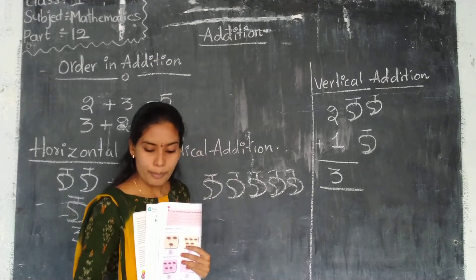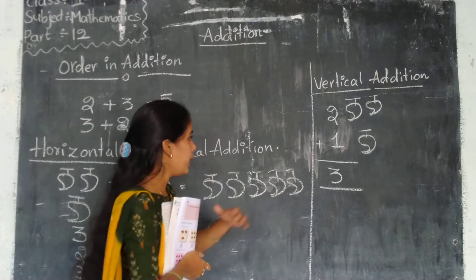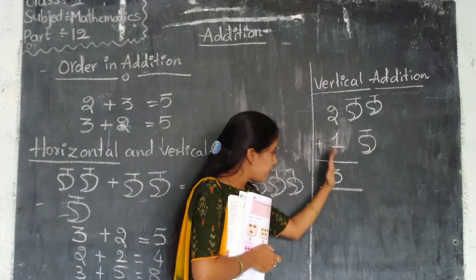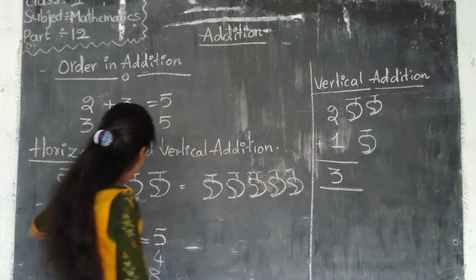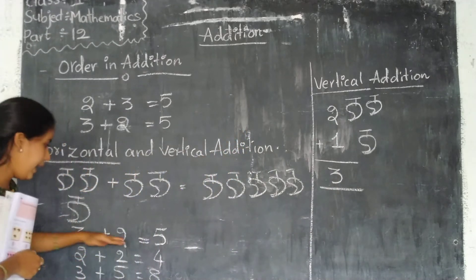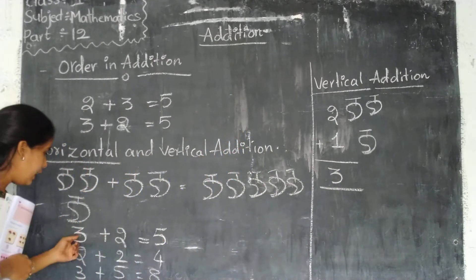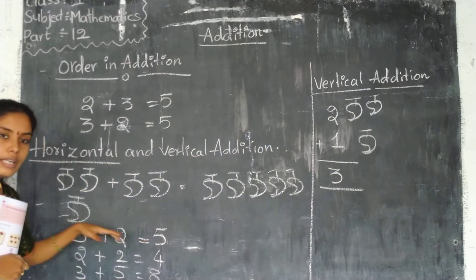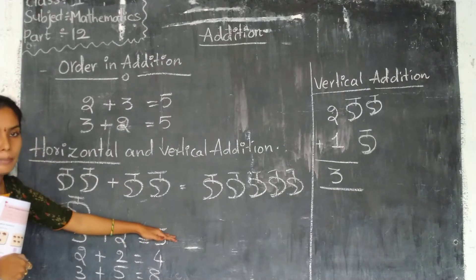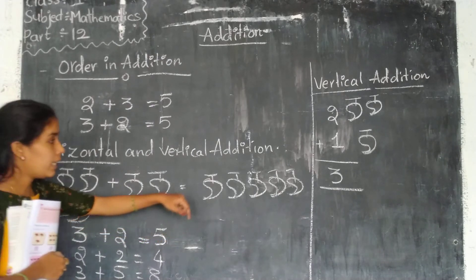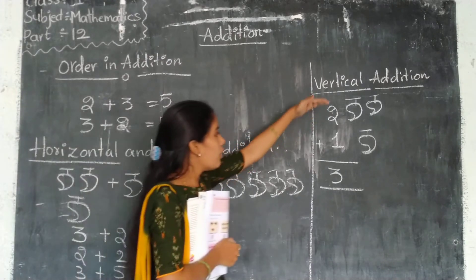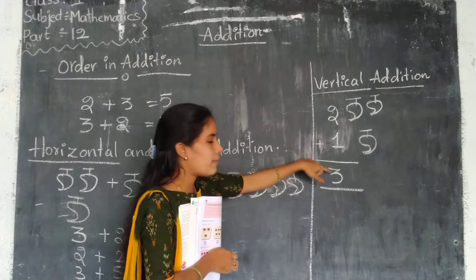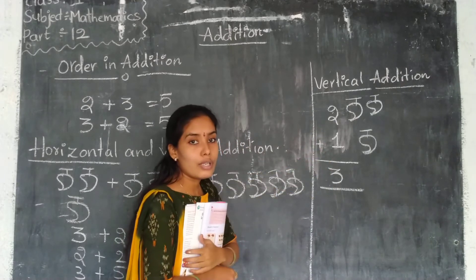Look and observe carefully. In horizontal addition we write numbers straight across in a line. But in vertical addition we write numbers one by one, stacked on top of each other. Two plus one equals three.